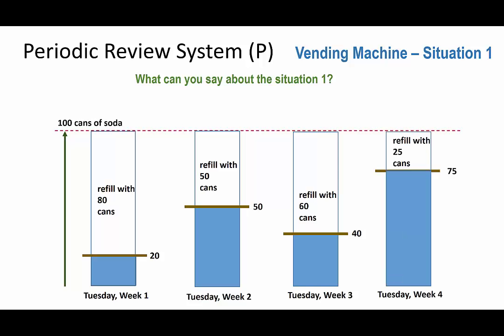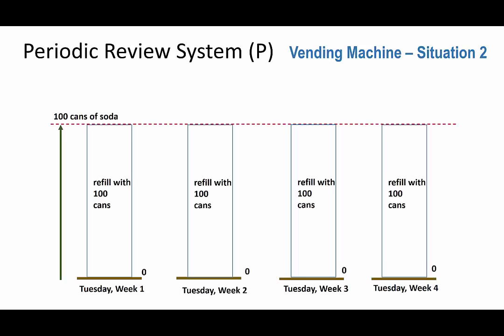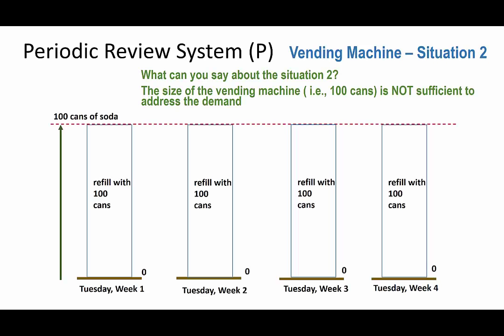Based on this four weeks' data, one can say the size of the vending machine is sufficient to address the demand. In another situation, the size of the vending machine is not sufficient to address the demand, because when the person visits the vending machine for all four weeks, there were no cans left. The demand was too high and the size of the vending machine is not sufficient.